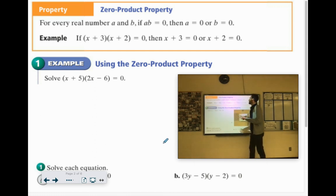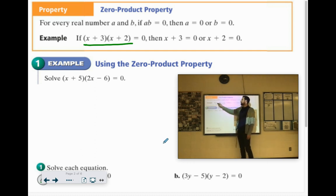So if you look, if we had something like x plus 3 times x plus 2 equals 0, if I can get the x plus 3 part to equal 0, then it doesn't matter what the other one is, because 0 times that would equal 0.